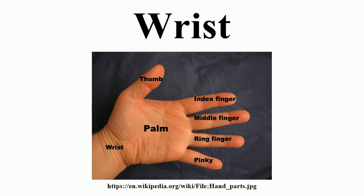In the hand proper, a total of 13 bones form part of the wrist: 8 carpal bones — scaphoid, lunate, triquetral, pisiform, trapezium, trapezoid, capitate, and hamate — and 5 metacarpal bones: the 1st, 2nd, 3rd, 4th, and 5th metacarpal bones.